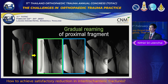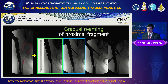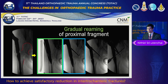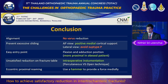You can correct fish mouth deformity by gradual reaming of the proximal fragment. The first technique uses a curved osteotome inserted into the canal for eccentric medial reaming. The second technique uses a bone hook to pull the medial fragment into the reamer and allow guide wire insertion.